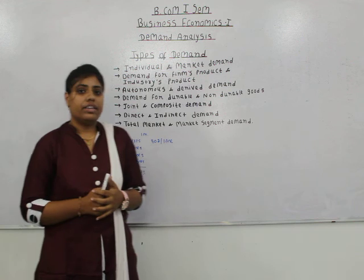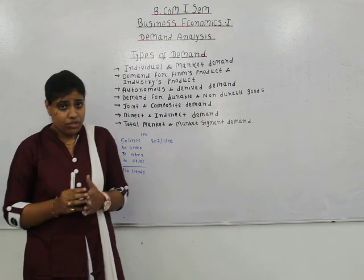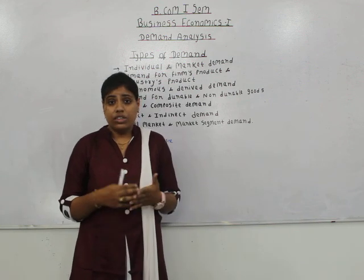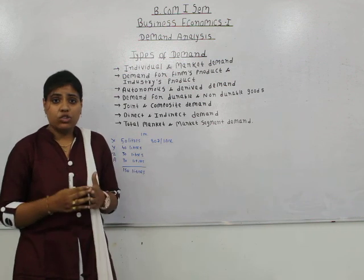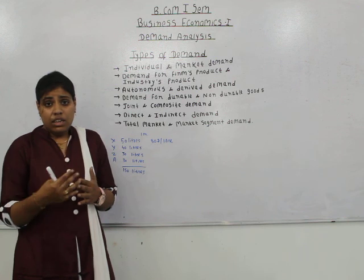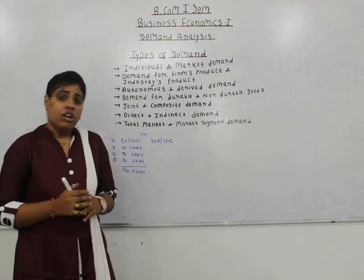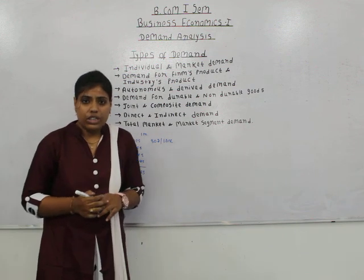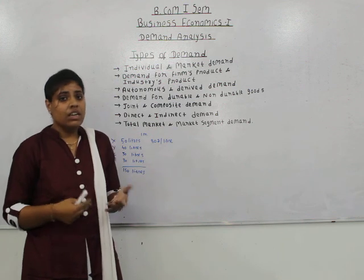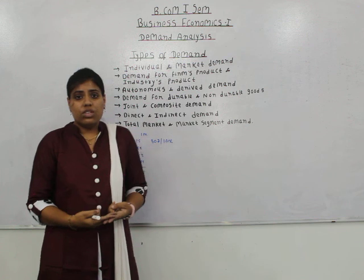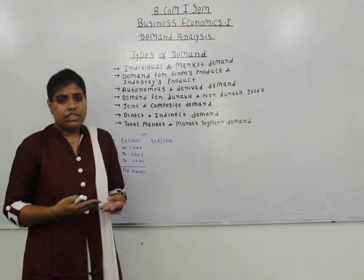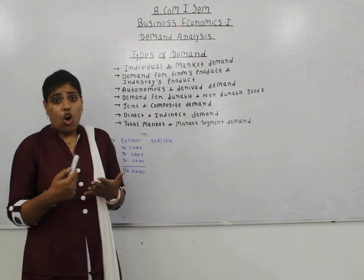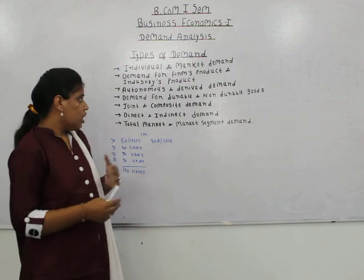Now we move to demand for a firm's product and the industry's product. A firm is an individual unit of an industry — a small part of it — while an industry is a group of many firms. For example, Toyota Cars is a firm in the automobile industry, whereas Toyota, Maruti Suzuki, Bajaj Auto Limited, Tata Motors, TVS Motors, etc., together constitute the automobile industry.